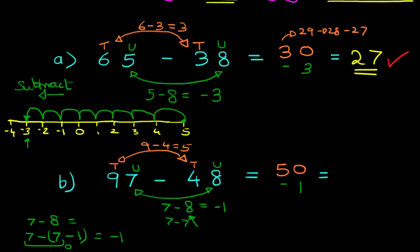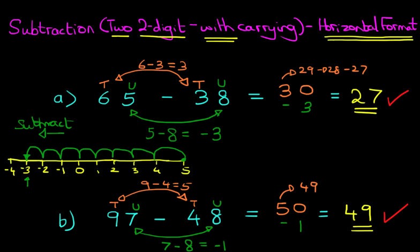So 50 minus one means we count back by one. And it is 49. So 97 minus 48 equals 49. Now, again, it's a lot simpler than it looks. Have a bit of a practice and you'll soon get the hang of this. So that is subtraction of two two-digit numbers with carrying using the horizontal format.